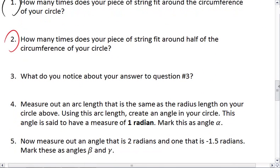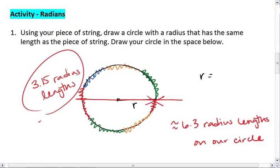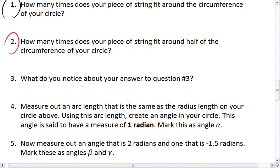What we should notice is that this number here is approximately pi of 3.1415 and so on. So we have about 6.3, about 3.15. We get pi.